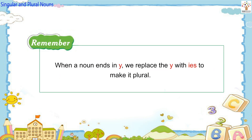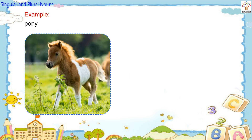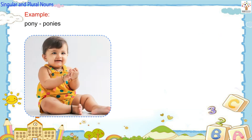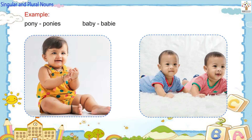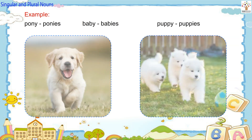When a noun ends in Y, we replace the Y with IES to make it plural. Examples: Pony — Ponies, Baby — Babies, Puppy — Puppies.